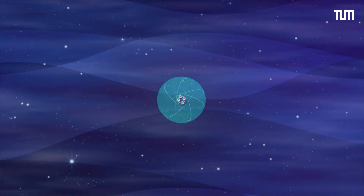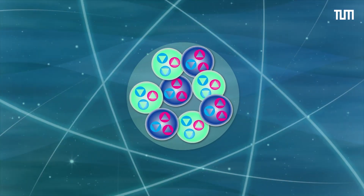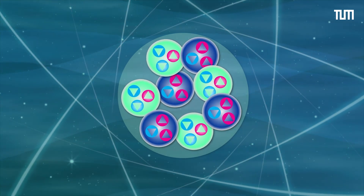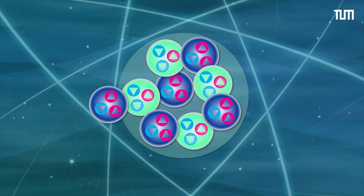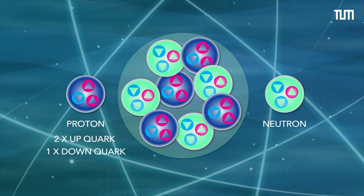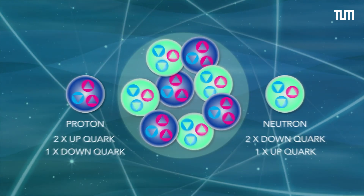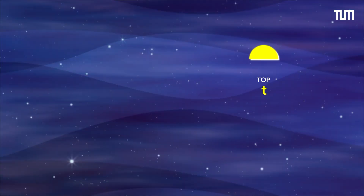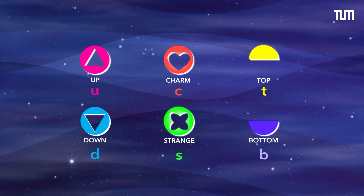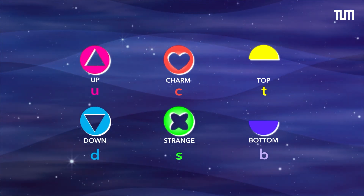Our world is made up of atoms. Atomic nuclei consist of nucleons — positively charged protons and neutrons — which in turn are composed of three quarks. There are six different types of quarks, with only the up and down quarks forming stable nuclei.